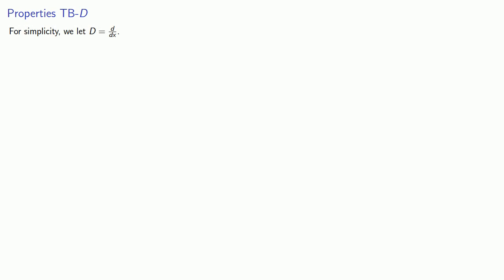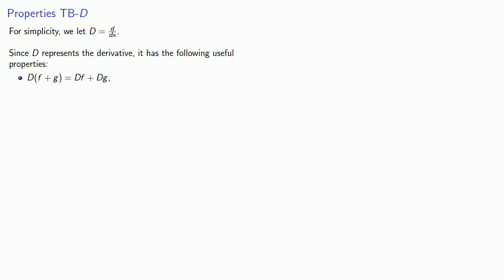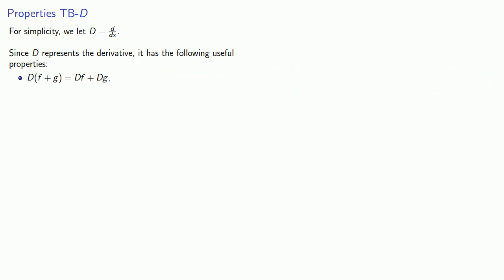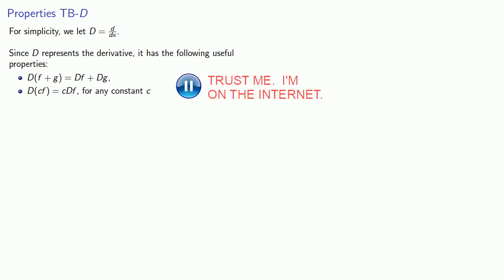We'll be using this differential operator a lot, so for simplicity we'll let capital D be the differential operator d over dx. Since D represents the derivative, it has the following useful properties: D applied to a sum f plus g is Df plus Dg — the derivative of a sum of functions is the sum of the derivatives of the individual functions. Likewise, D applied to cf for any constant c is c times Df — the derivative of a constant times a function is the constant times the derivative of the function.